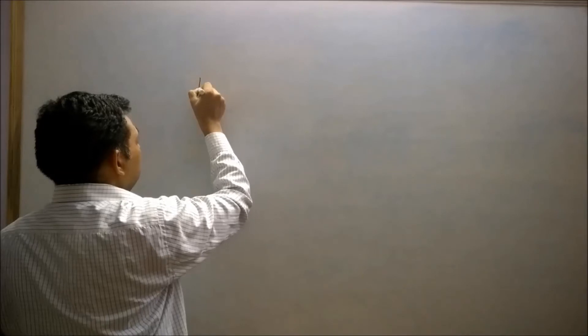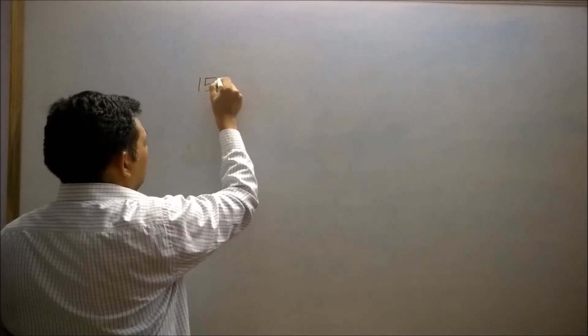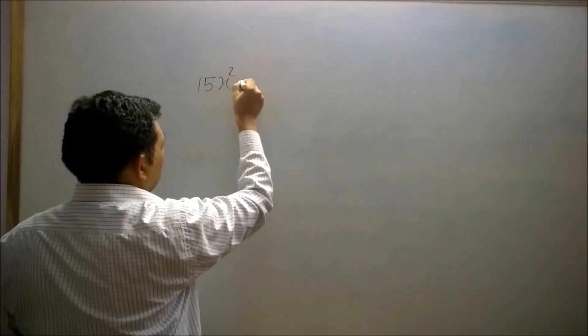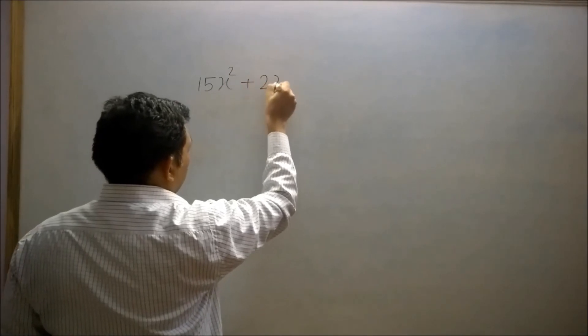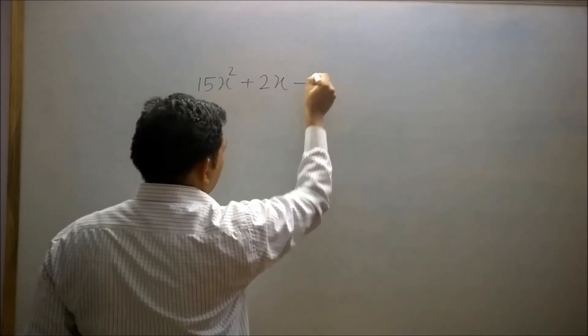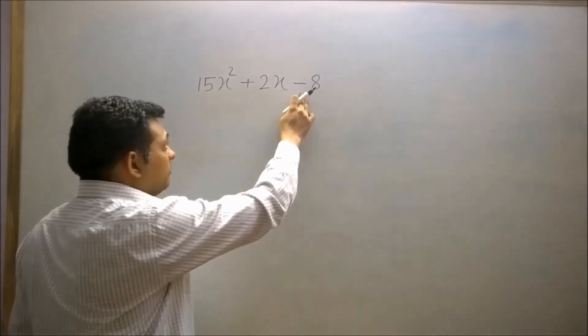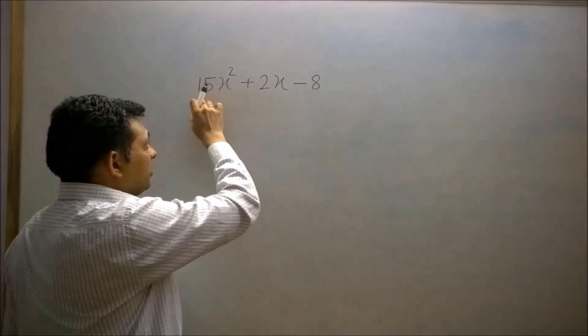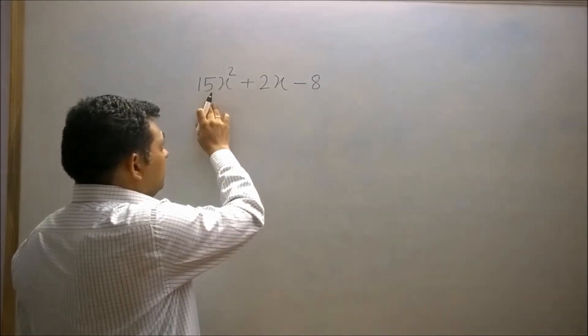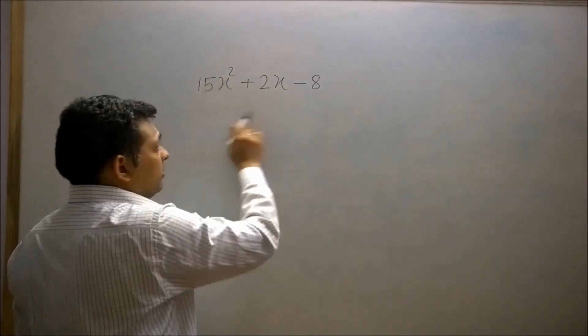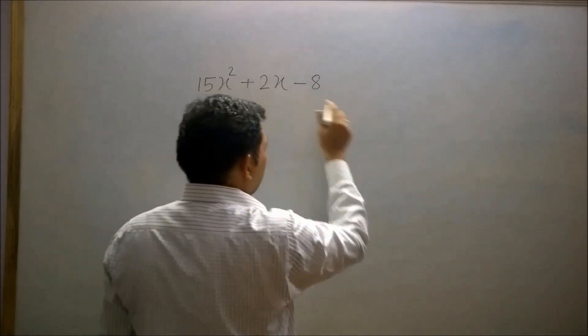Now I am going to find the factors of a quadratic polynomial in which the constant term is negative and the coefficient of x² is positive. Consider 15x² + 2x − 8. Here the constant term is negative but the coefficient of x² is positive. Multiply the coefficient of x² and the constant term: 15 × 8 = 120.